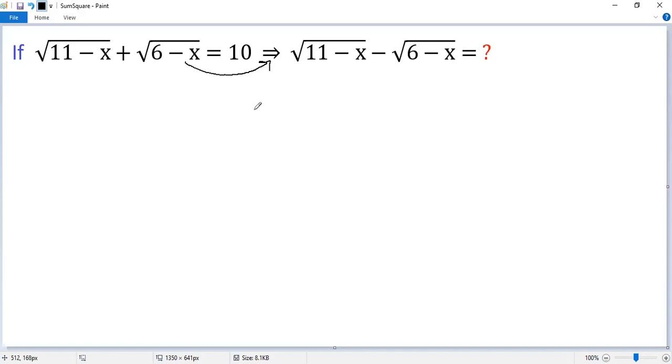So let's solve it in a simpler way. We denote the first one as a, the second as b. So let a equals square root of 11 minus x, b equals square root of 6 minus x.